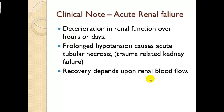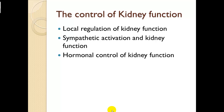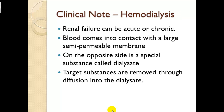Clinical note — acute renal failure: deterioration in renal function over hours or days. The number one cause in trauma and medical cases is prolonged hypotension, which causes acute tubular necrosis from inadequate blood supply to the glomerulus. Recovery depends on restoring renal blood flow. If blood supply is cut off for four to six hours, there is a good possibility of permanent renal failure. Hemodialysis: blood comes into contact with a large semi-permeable membrane; on the opposite side is a special substance called dialysate. Target substances are removed through diffusion into the dialysate.